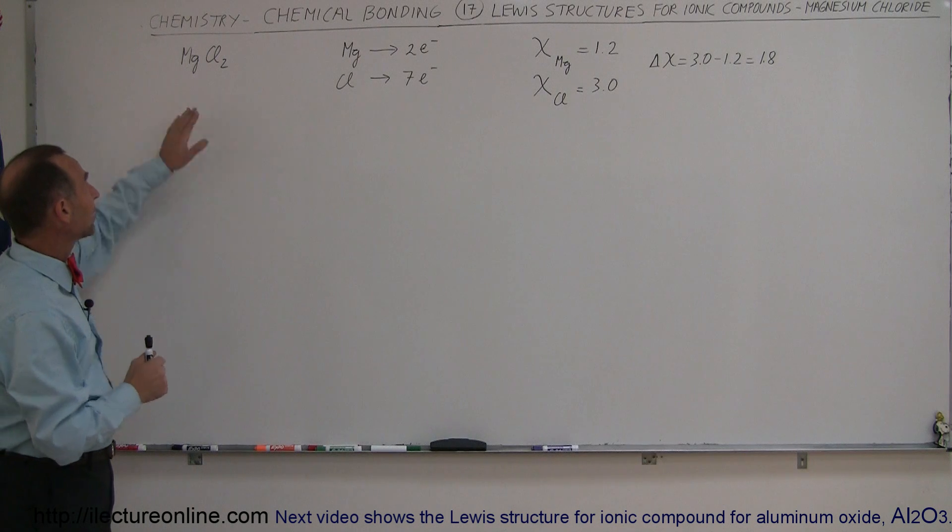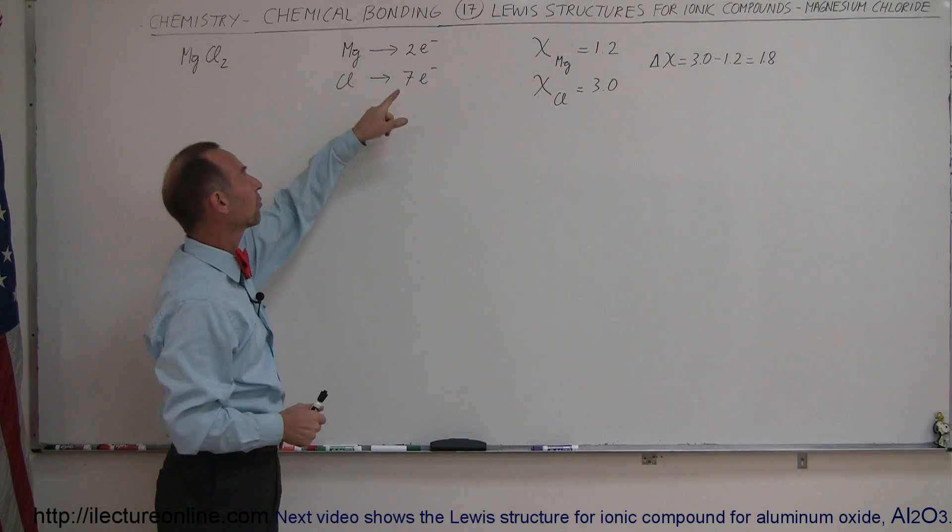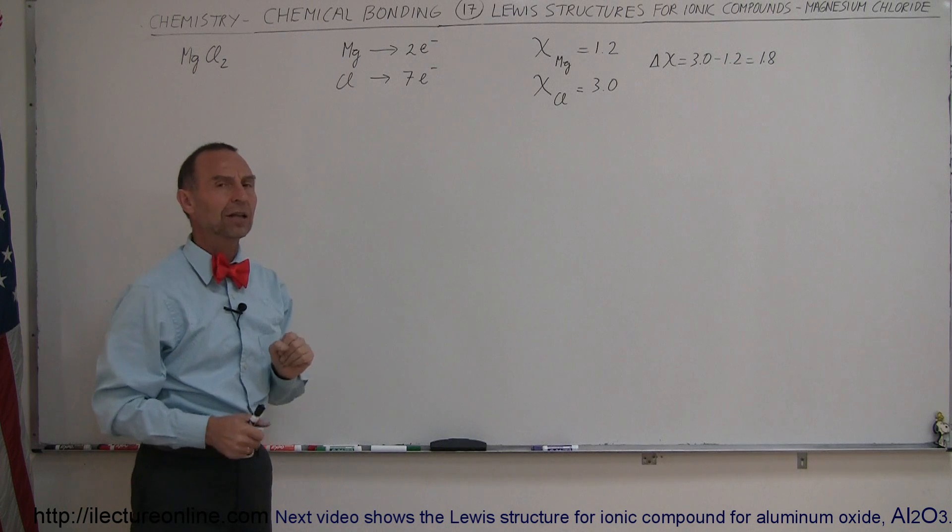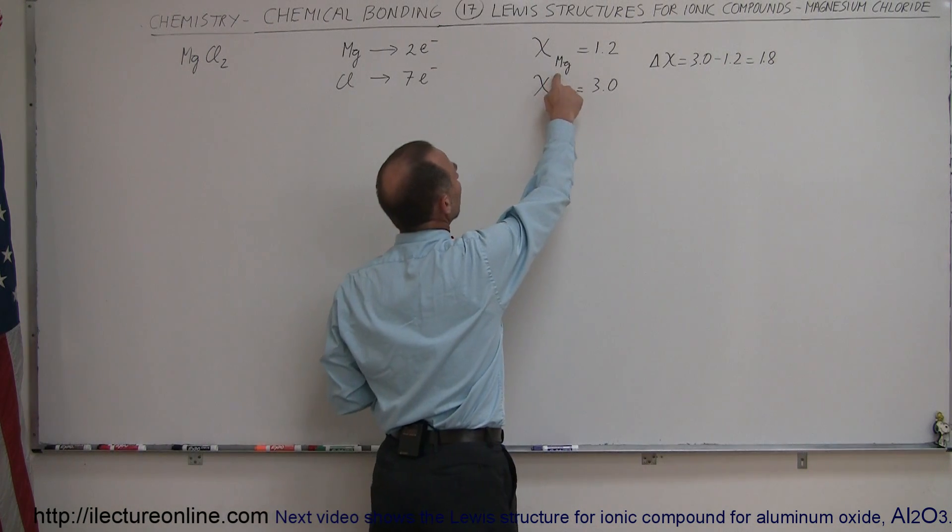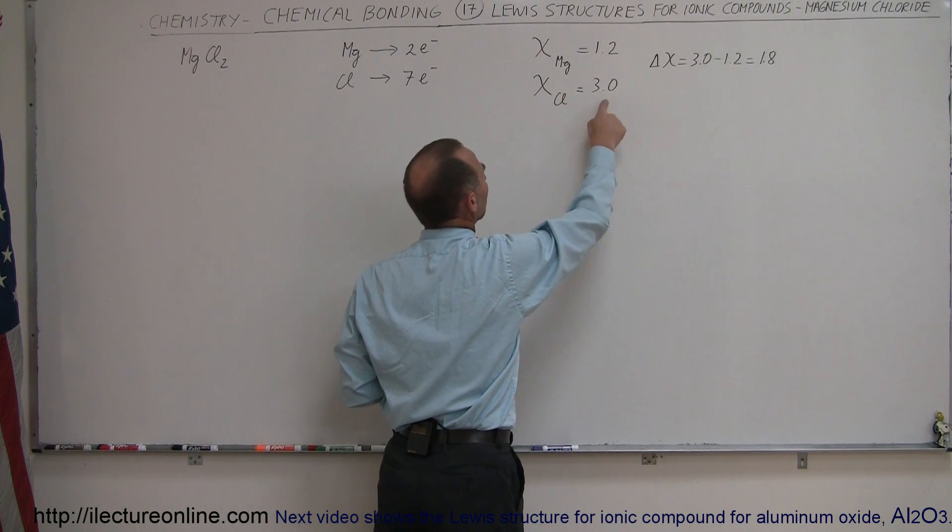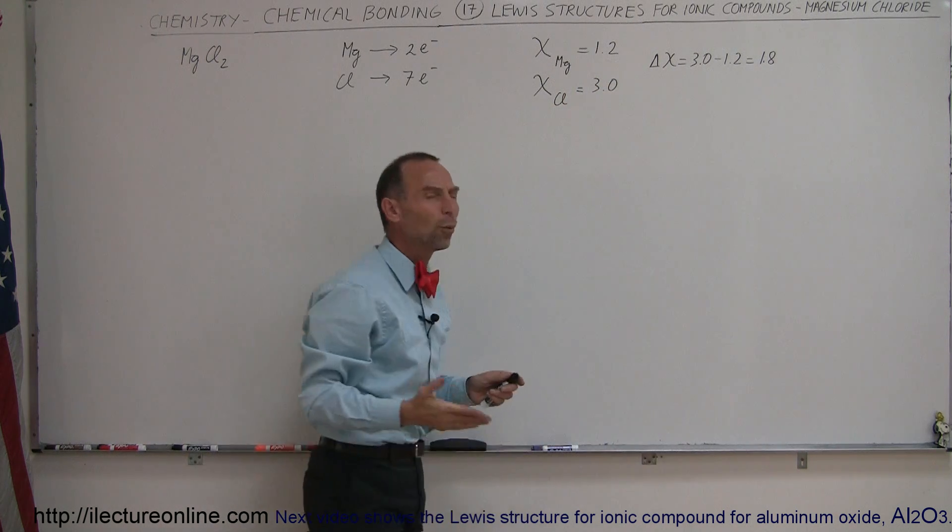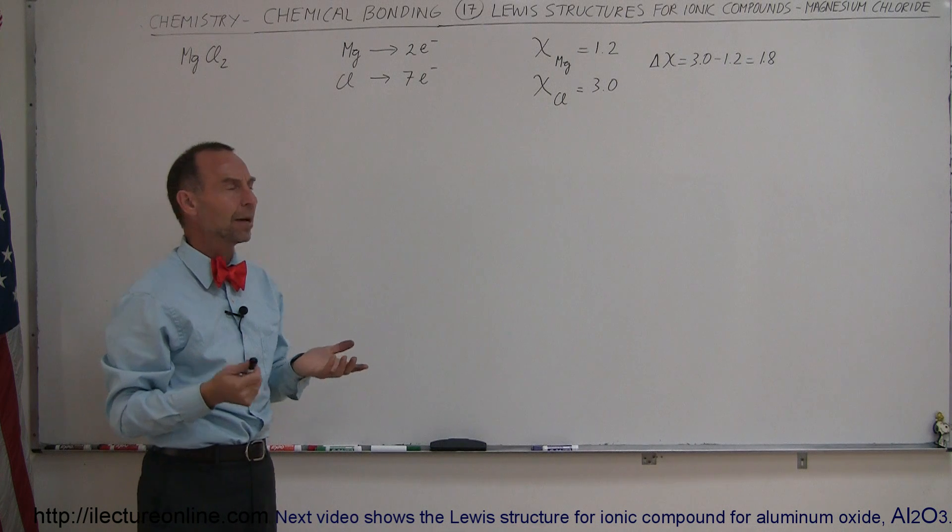So here we have magnesium chloride. Magnesium has two valence electrons. Chlorine has seven valence electrons. In addition to that, the electronegativity for magnesium is 1.2, for chlorine is 3.0. Notice the difference is 1.8. Does that make that an ionic compound?